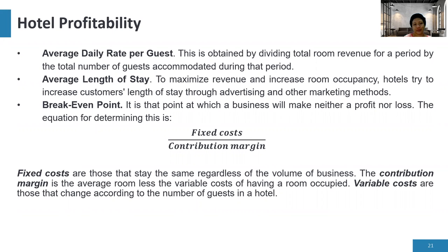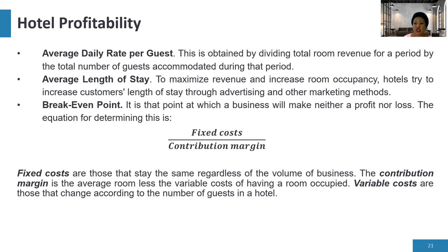Another profitability measure is the average daily rate per guest, obtained by dividing total room revenue for a period by the total number of guests accommodated. Another measure is average length of stay — to maximize revenue, hotels try to increase customers' length of stay through advertising and other marketing methods, since the longer guests stay, the more income is generated.